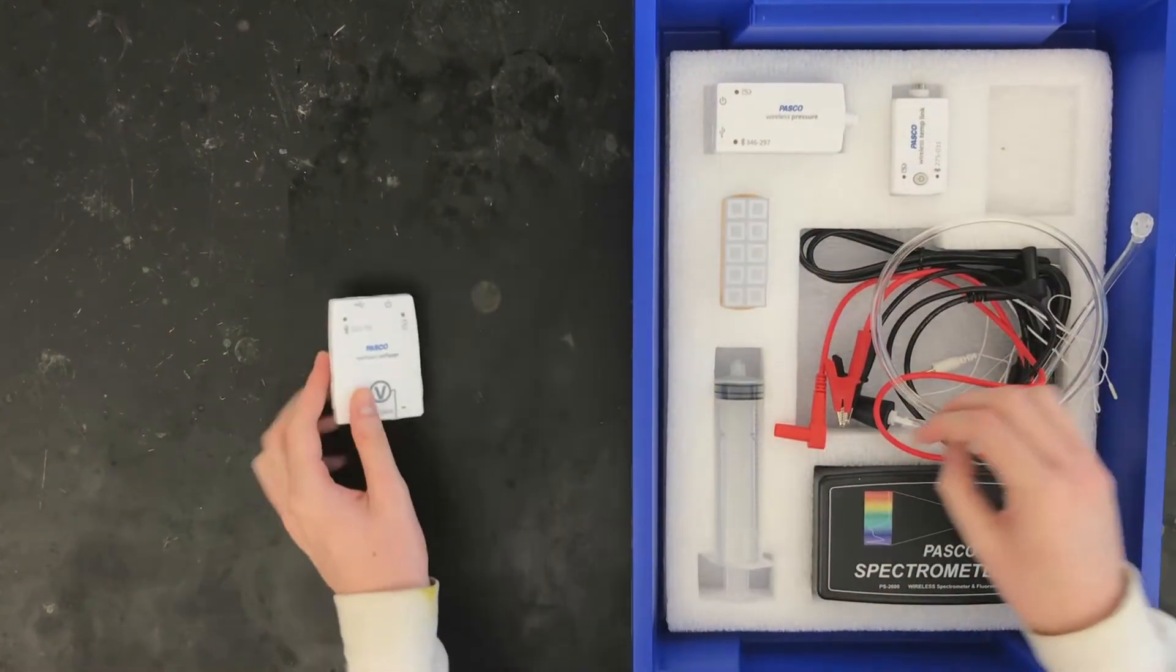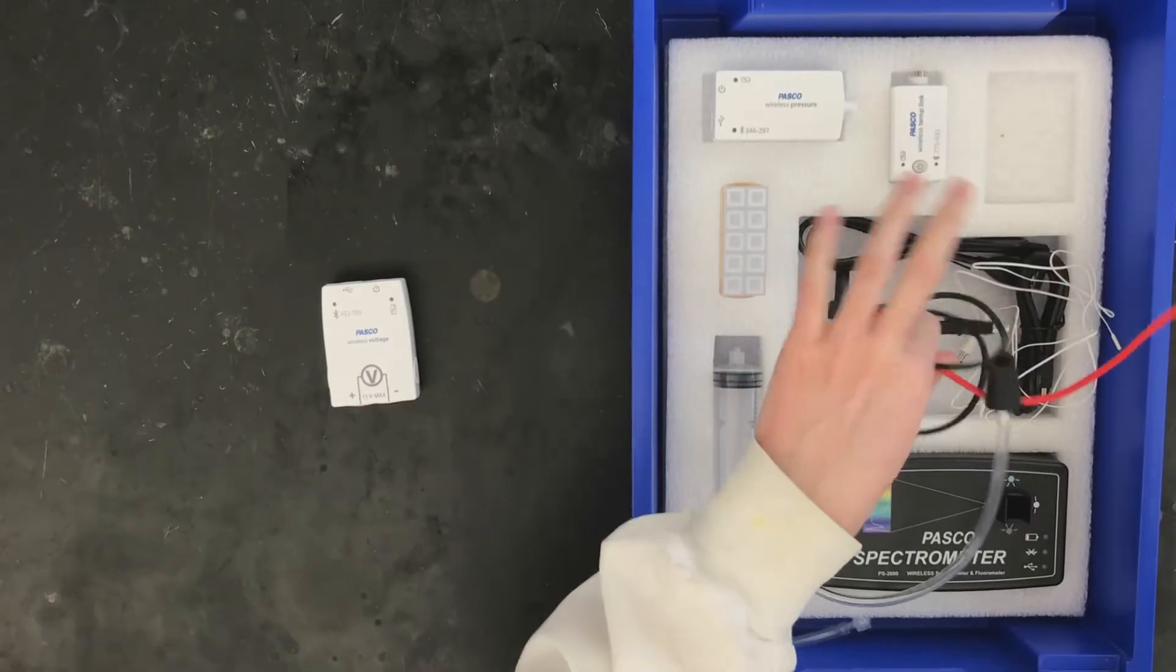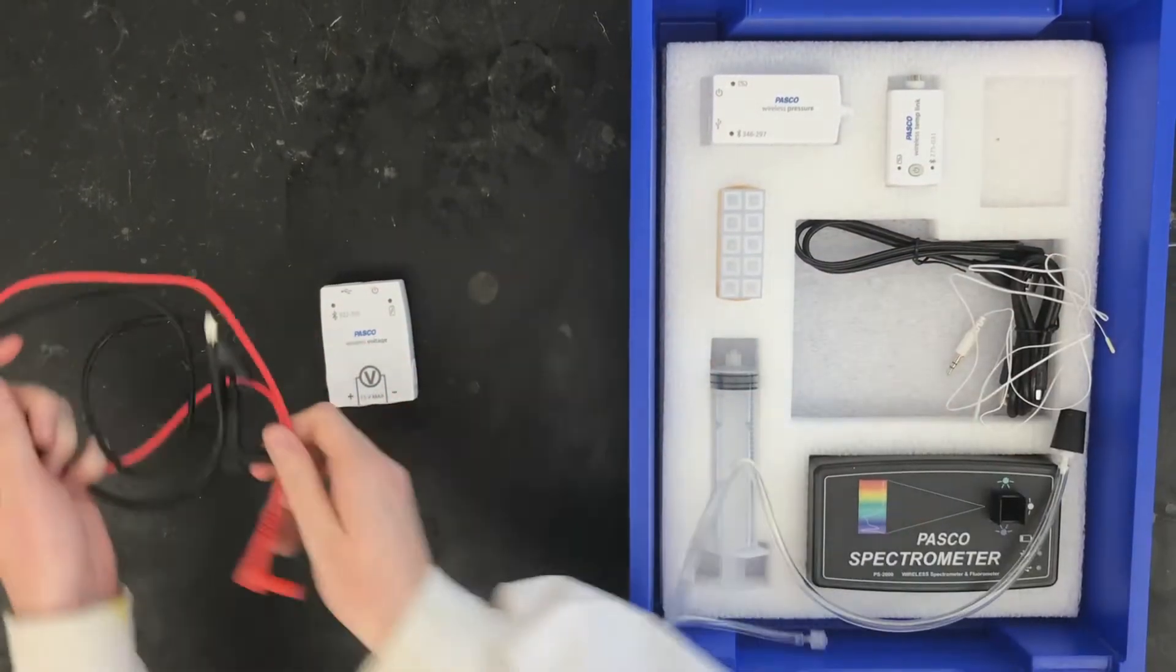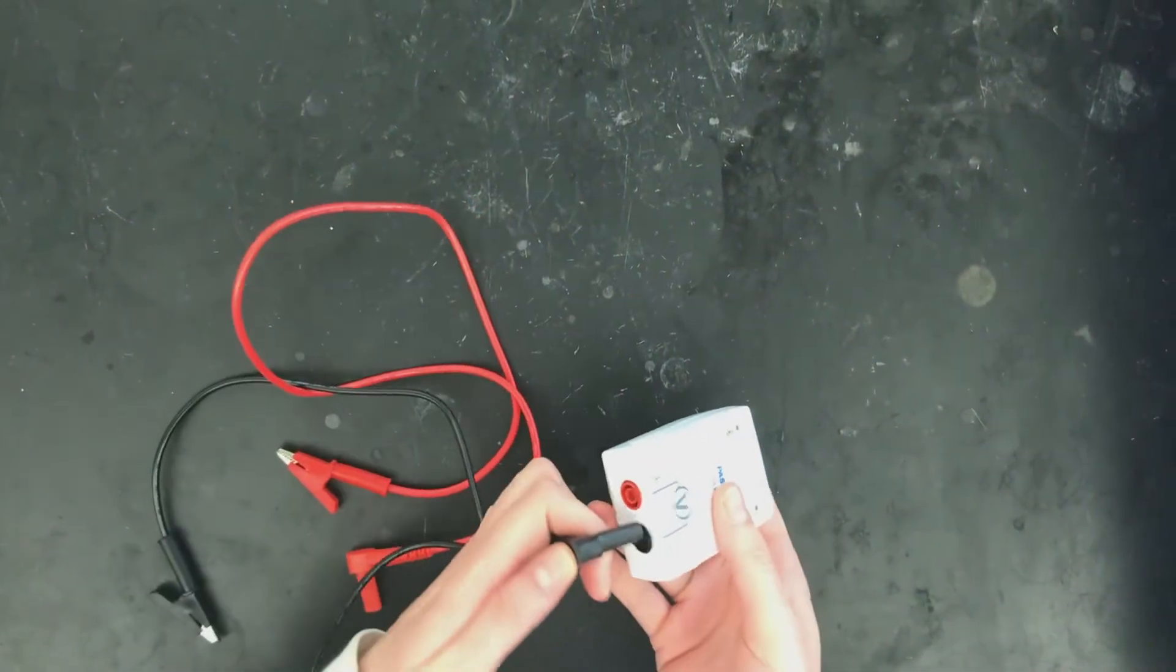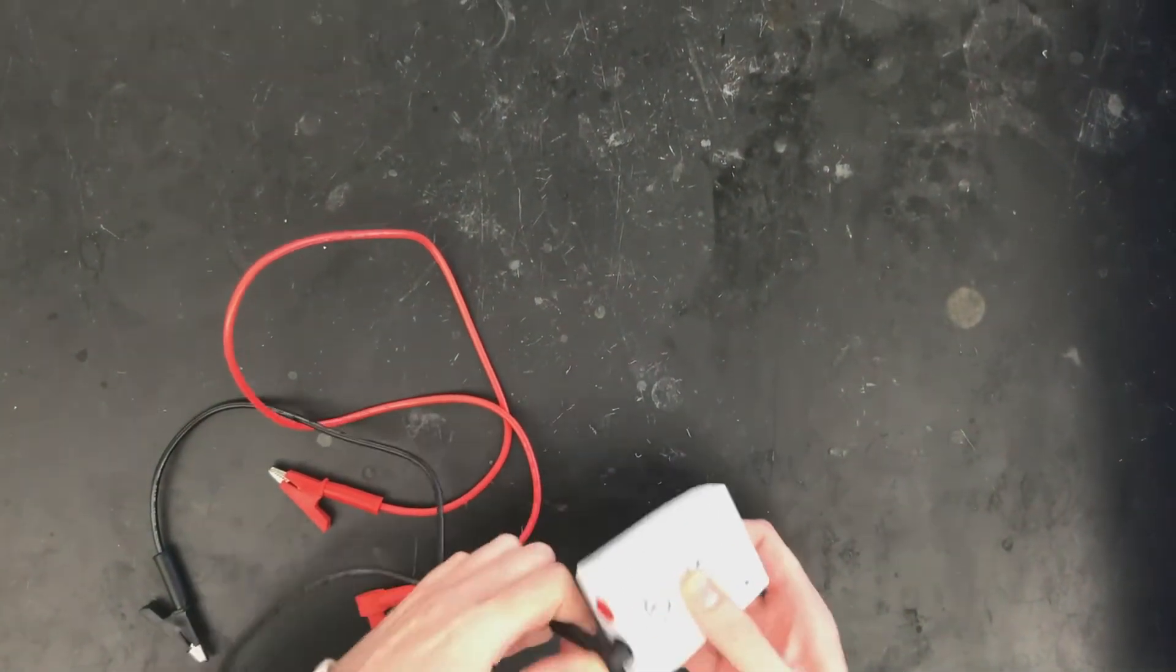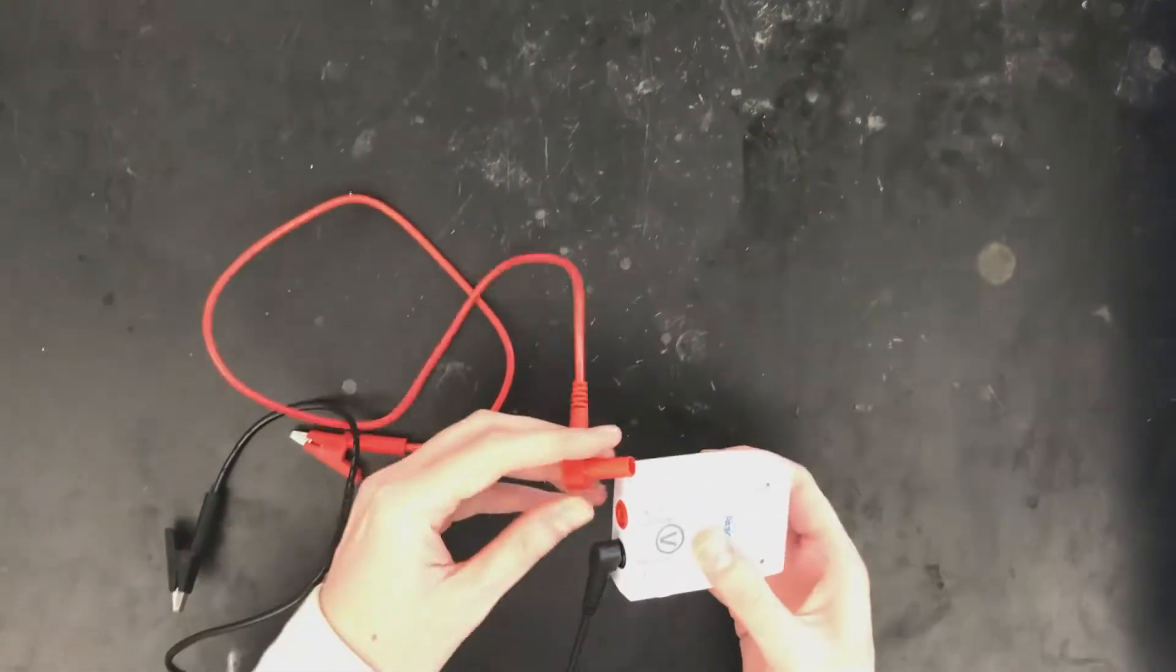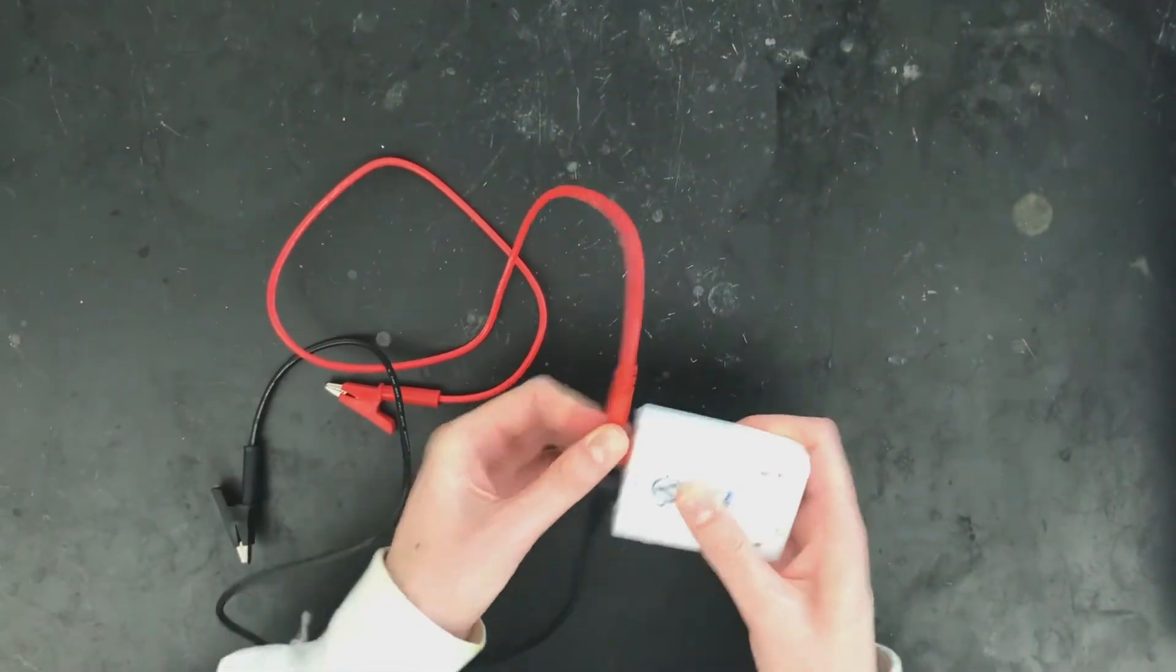Today you'll be using the voltmeter and the red and black alligator clips. Upon plugging in the alligator clips, you should turn on the voltmeter and watch for the red flashing light. Once you connect them via Bluetooth on your computer, the light will flash green.